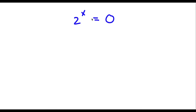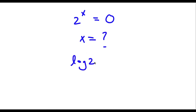Alright, so I have 2 to the power of x equals 0, and I want to find the value of x. So first, I'm going to take the log on both sides. So now I have log 2 to the power of x is equal to log 0.